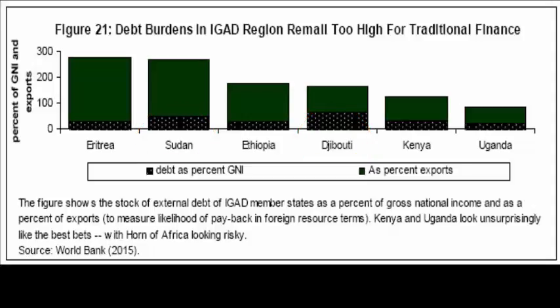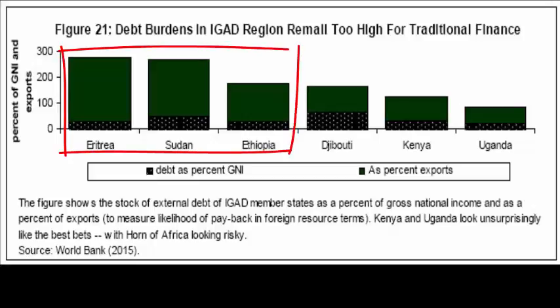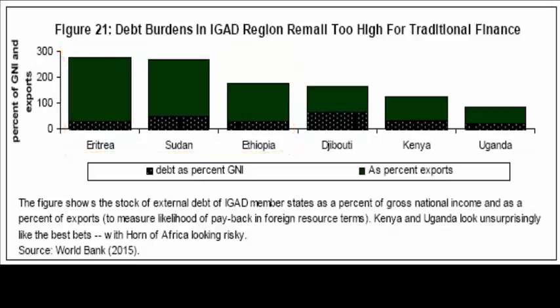As a percent of exports, we see that these debts are highest for Eritrea, Sudan, and Ethiopia. This suggests that even if these economies became much more export-oriented, they still wouldn't generate enough resources in order to pay off the loans that they already have.